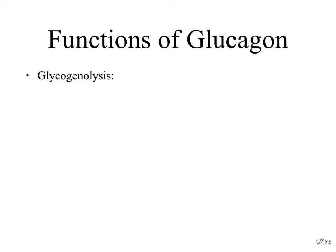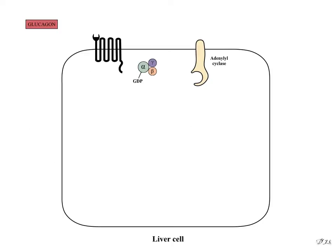Functions of glucagon include glycogenolysis, gluconeogenesis, lipolysis, and ketogenesis. Glucagon is glycogenolytic, gluconeogenic, lipolytic, and ketogenic.